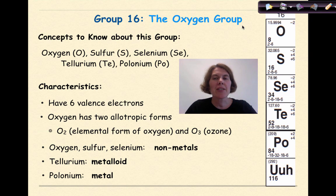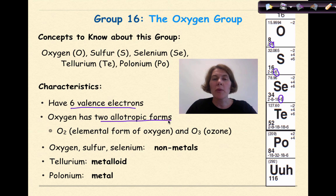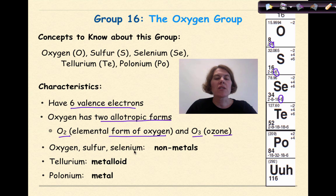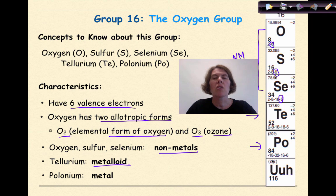Now let's talk about Group 16, the oxygen group, which includes oxygen, sulfur, selenium, tellurium, and polonium. Each of these has six valence electrons. Oxygen has two allotropic forms: O2, our elemental form of oxygen, and O3, which is ozone. Oxygen, sulfur, and selenium are all non-metals. Tellurium is our metalloid, and polonium at the end is our metal. Again, we see that increasing metallic character as you go down a group.